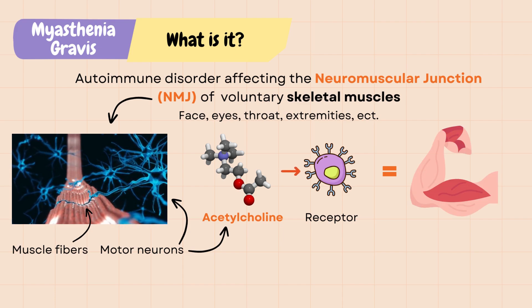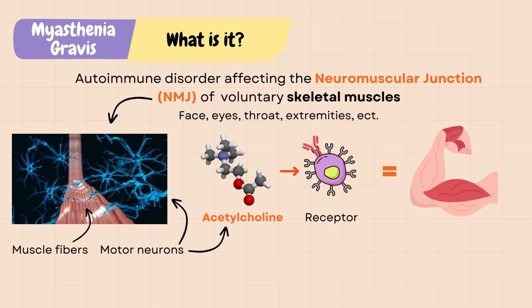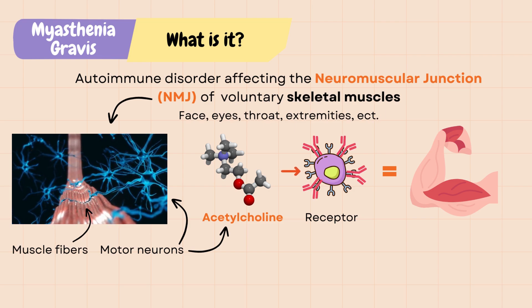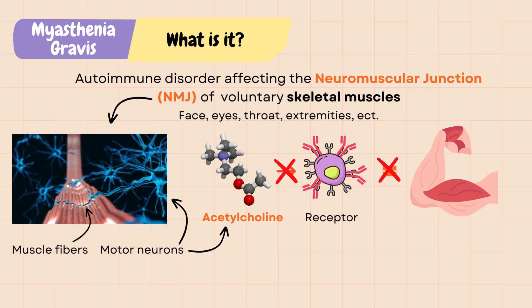In MG, the immune system makes antibodies that attach to the acetylcholine receptors, making them insensitive to acetylcholine, thereby blocking neuromuscular transmission and leading to muscle weakness.